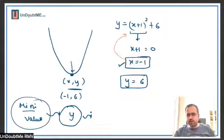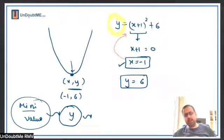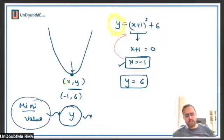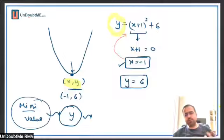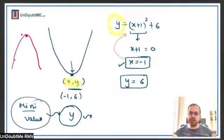From now on, fix in your mind that when we say 'value of a function', we are talking about y. Value of a function means y. When they say minimum value, we work with the vertex. Why is this vertex the minimum? Because this is an upward parabola. If they say find the maximum value, we say it is not possible. You can find maximum value only for a downward parabola.